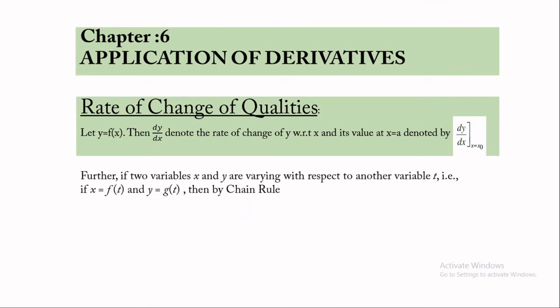Further, if two variables x and y are varying with respect to another variable t — that is, if x = f(t) and y = g(t) — then by the chain rule, dy/dx = (dy/dt) divided by (dx/dt), if and only if dx/dt is not equal to zero, because the denominator cannot be zero.